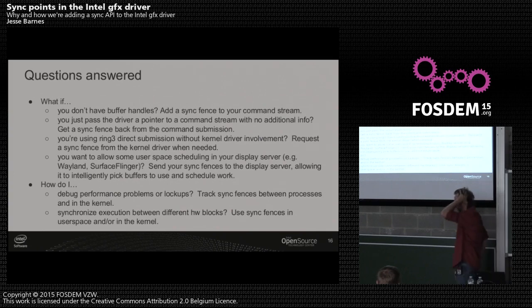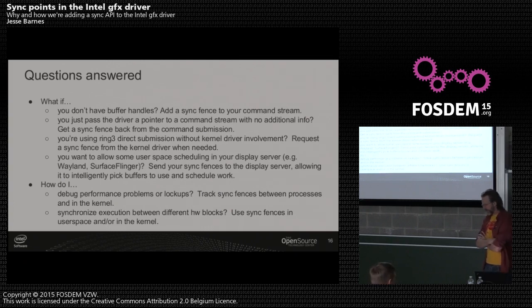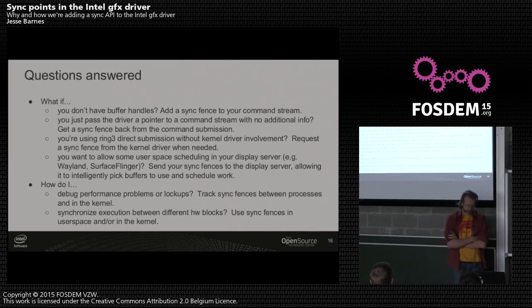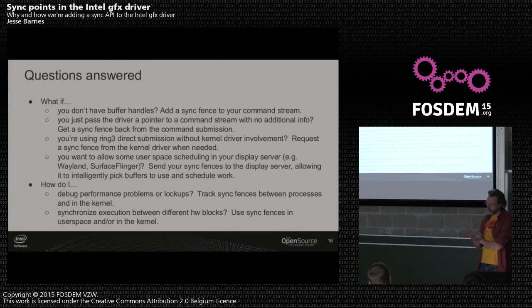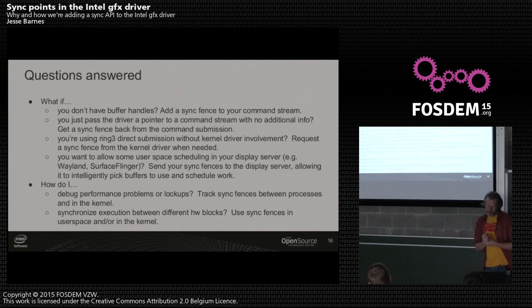Getting back to the motivating questions: if you don't have buffer handles, it's really hard to do buffer-based synchronization without buffers. Sync fences and explicit synchronization help us get around that — we can actually query for command completion even though there are no buffers involved. If you're passing the driver just a pointer saying 'go run this' without knowing what's being accessed, we can get fences back for that and synchronize against it without having knowledge of the buffers.